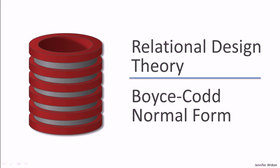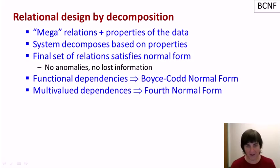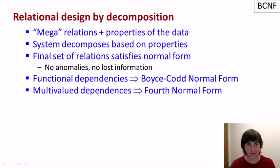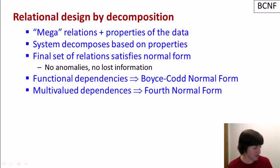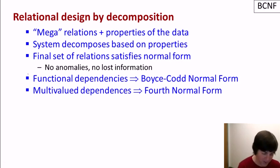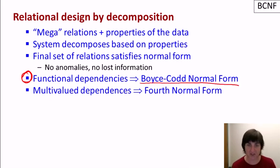Now that we've learned about functional dependencies, let's talk about how they're used to create relations that are in Boyce-Codd normal form. As a quick reminder about relational design by decomposition: the database designer creates mega relations containing all the information to be captured, specifies properties of the data, and the system uses those properties to decompose the relations into smaller ones. Those final decomposed relations satisfy a normal form — they don't have anomalies and they don't lose information. Functional dependencies are used to create relations in Boyce-Codd normal form, and multi-valued dependencies are used to create relations in fourth normal form.